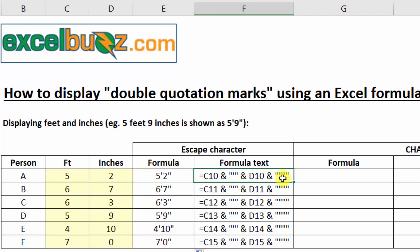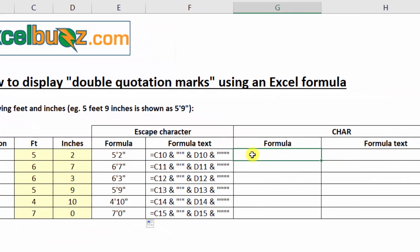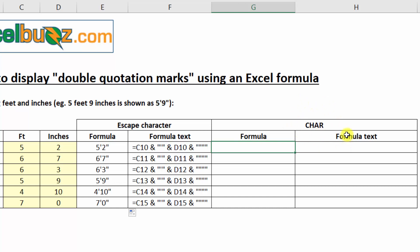Now it actually becomes a bit tricky sometimes, especially in long complicated formulas to count all of these double quotation marks. Sometimes there's two, sometimes there's three, or in a case like this, there might be four. So what we can do instead is use the character function, C-H-A-R. So let's use that one in column G.